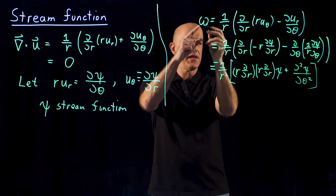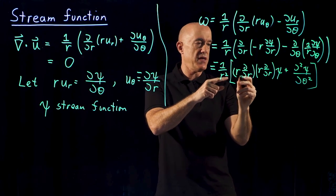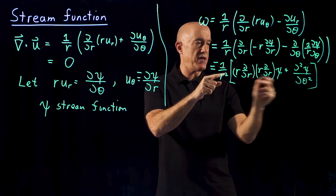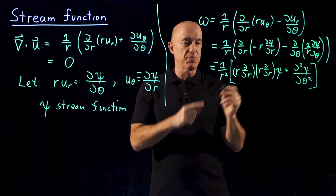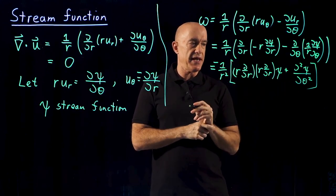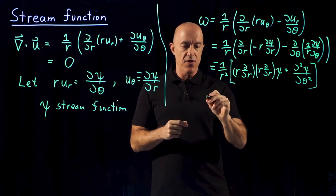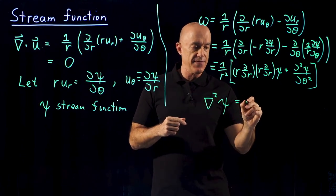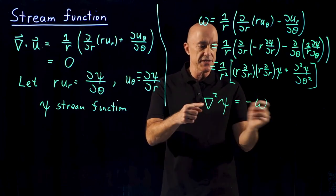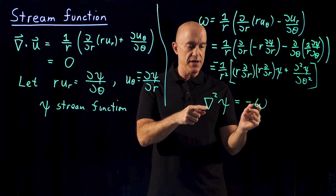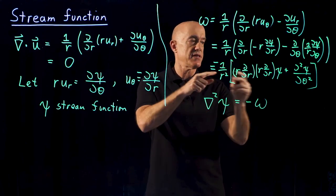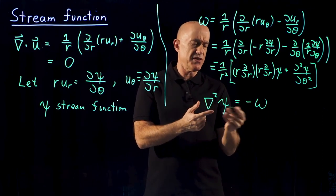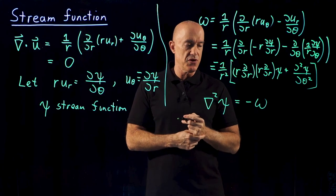That gives us the vorticity in terms of the derivatives of the stream function. This whole operator operating on ψ is actually the Laplacian. So this equation is a complicated way of writing the Laplacian of ψ, and the result is negative ω equals the Laplacian of ψ. This is valid in both polar and Cartesian coordinates — it is the polar coordinate form of the two-dimensional Poisson equation.